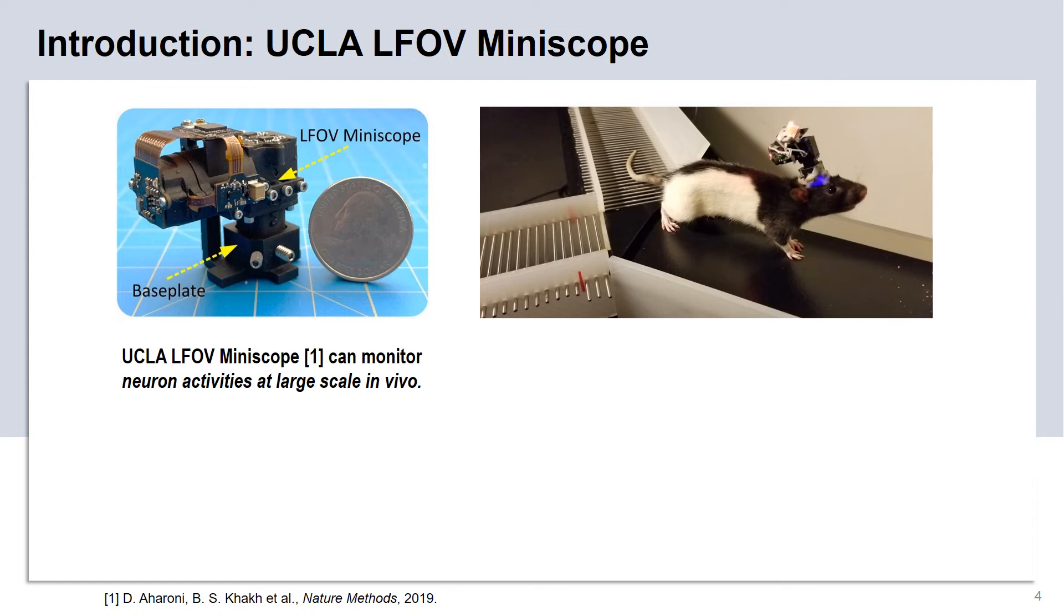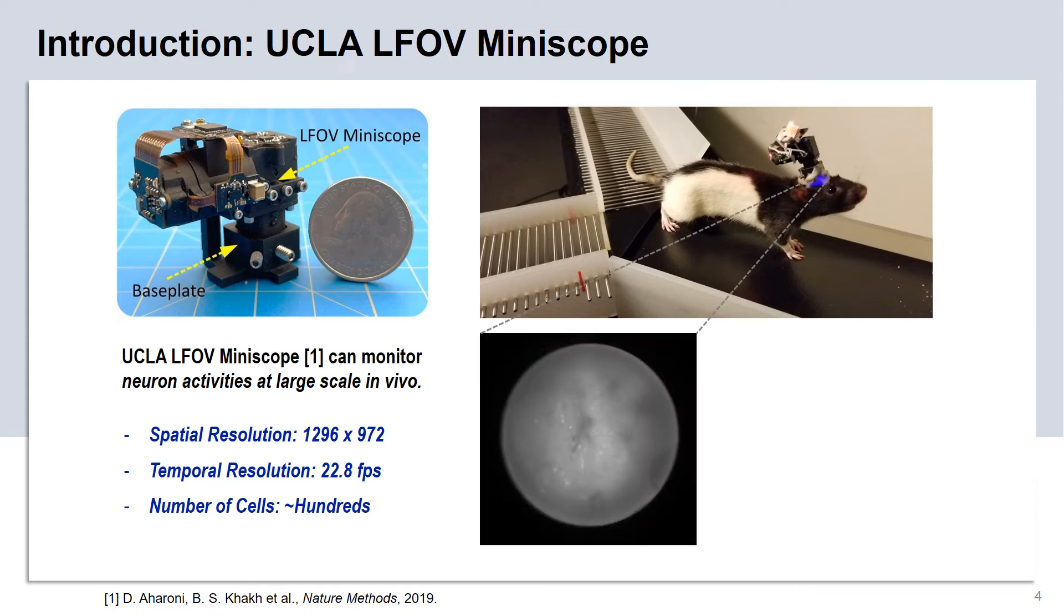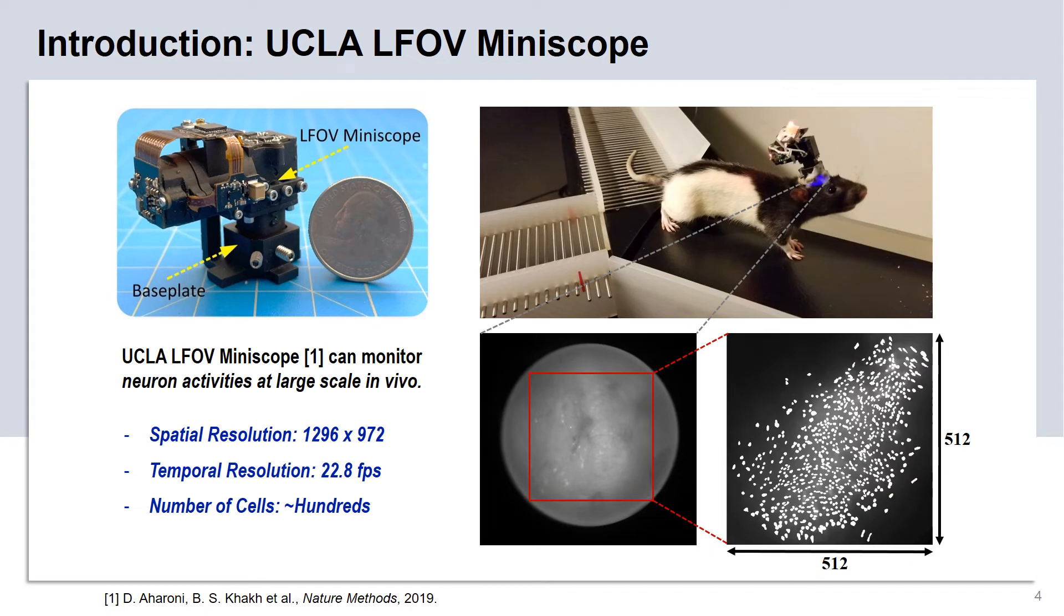The LFOV, which is short for Large Field of View Miniscope, is the latest version of the UCLA Miniscopes. It has a large spatial resolution of 1296 by 972 pixels and a temporal frame rate of 22.8 frames per second. Depending on the specific brain region it is monitoring, it can detect over hundreds of cells within a single recording session. This photo shows an example of the calcium image captured by the LFOV miniscope. For ease of computation, we cropped 512 by 512 region from the image, and within the cropped image region, this figure shows that over 700 cells can be detected.